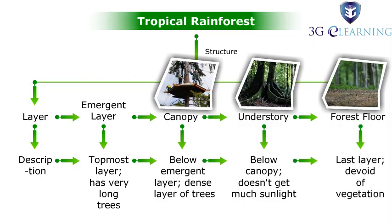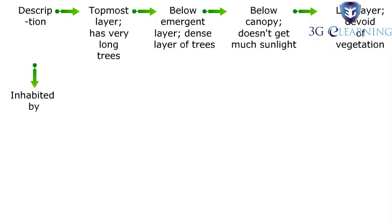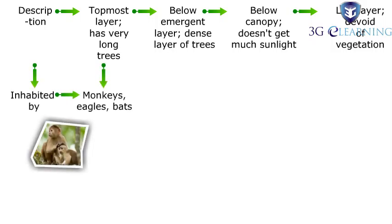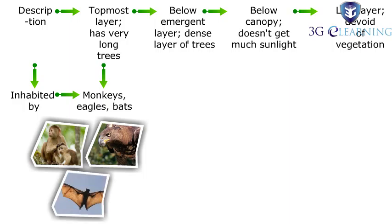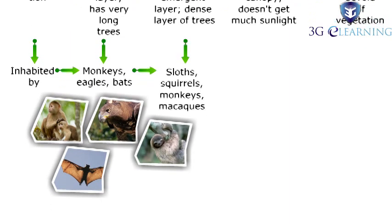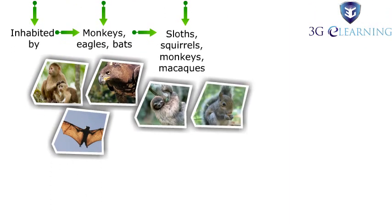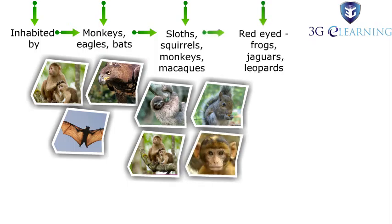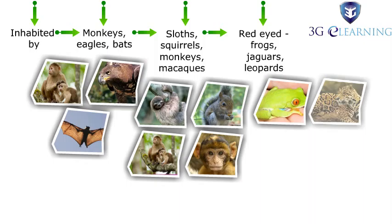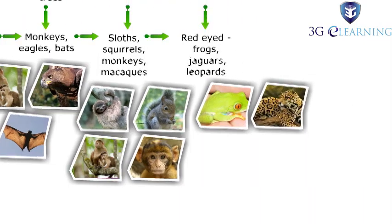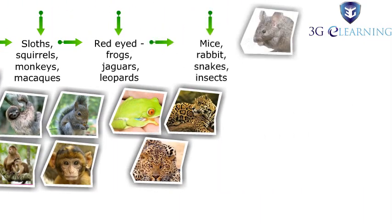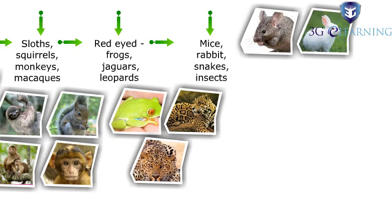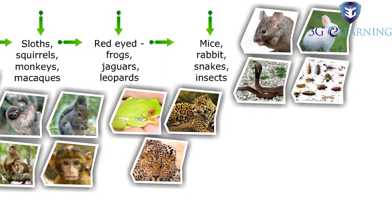The last layer, the forest floor, is largely devoid of vegetation. The rainforest is inhabited by a wide variety of animals including monkeys, eagles, bats, sloths, squirrels, red-eyed frogs, jaguars, leopards, mice, rabbits, snakes, and insects.